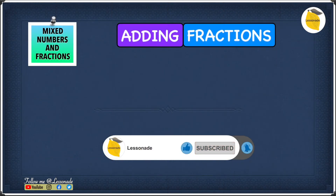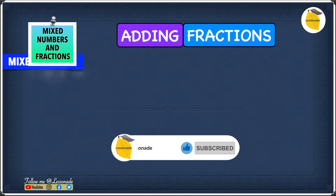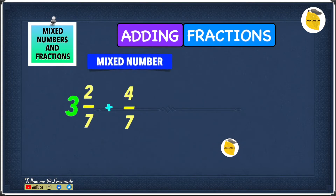Now let's have a look at adding mixing numbers and fractions. The example we have is 3 2 over 7 plus 4 over 7, where 3 2 over 7 is the mixing number and 4 over 7 is the fraction.